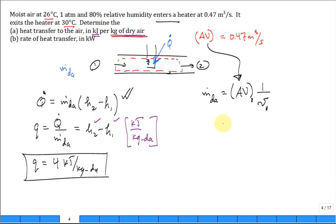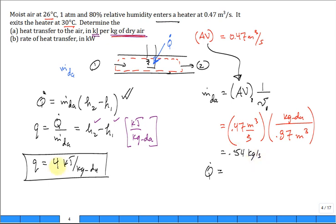Charts are often hard to see. So 0.47 meters cubed per second times 0.87 meters cubed per kilogram of dry air gives us the mass flow rate in kilograms of dry air per second. Then you multiply it times this delta H, and then you get Q dot. Well, this is 0.54 kilograms per second. Then multiply that by four kilowatts.